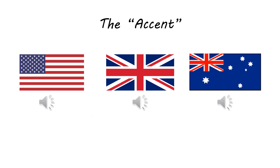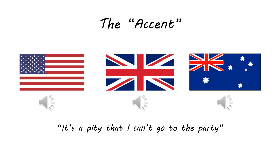Before we can start diving into the vowels, we have to solve a particular problem. When you hear an American, a British person, and an Australian pronounce the sentence 'it's a pity that I can't go to the party,' you can definitely hear those differences in pronunciation. But when you write them down, you write them all the same way. That's because we've standardized the orthography — the way we write English — so you spell the word the same way regardless of how you pronounce it. The word 'pity' is always going to be spelled the same way across different dialects.